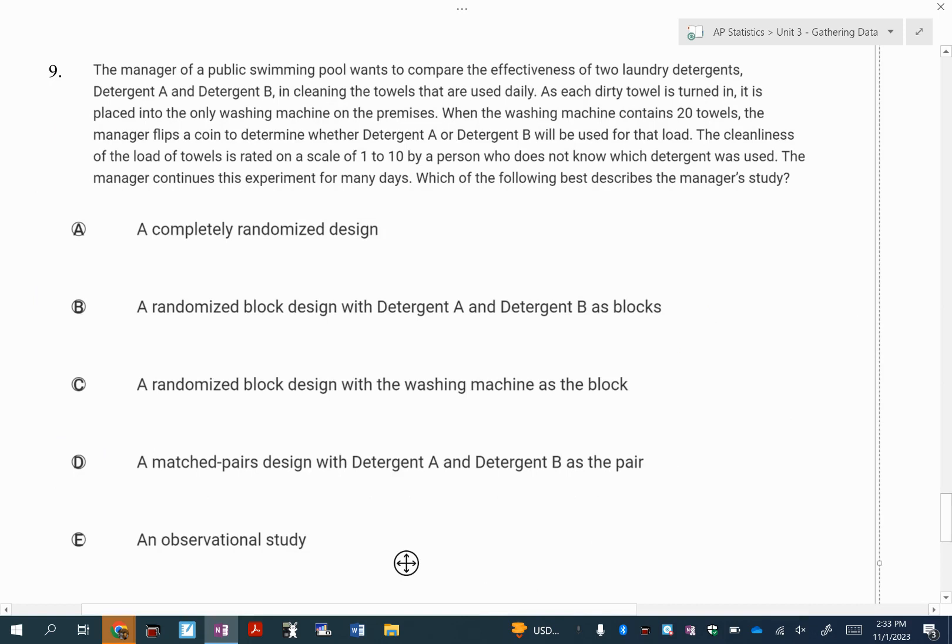Number nine, this one, which one best describes the manager's study? I should have looked real quick at the most wrong answer. I'm guessing it had to do with blocking. The idea of matched pairs, that would mean you would have to only look at two towels at a time. You pair up the towels in some way, and they're not, right? They just grab a towel, they flip a coin, however it lands, that's how they determine detergent A or detergent B, and then they move forward.